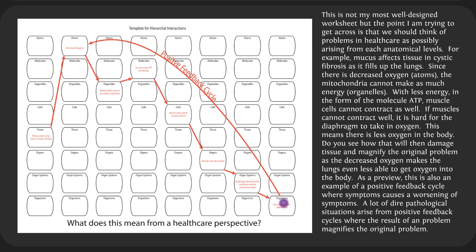And one thing to plant as a seed: if the organism can't get enough oxygen into the lungs, it creates a feedback loop. If the diaphragm can't work to suck air in, it magnifies the original problem of mucus — it becomes harder not only for oxygen already in the lungs to pass through the mucus, but also harder to get oxygen into the lungs in the first place. That's a positive feedback cycle where things get progressively worse.